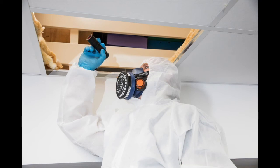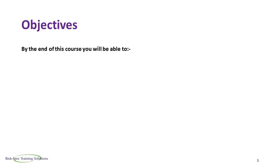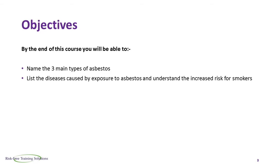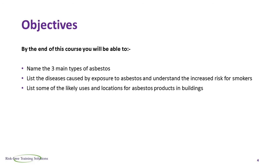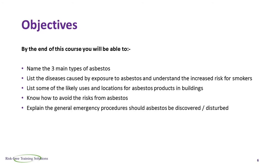Welcome to this digital learning video on asbestos awareness. By the end of this course you will be able to name the three main types of asbestos, list the diseases caused by exposure to asbestos and understand the increased risk for smokers, list some of the likely uses and locations for asbestos products in buildings, know how to avoid the risks from asbestos, and explain the general emergency procedures should asbestos be discovered or disturbed.